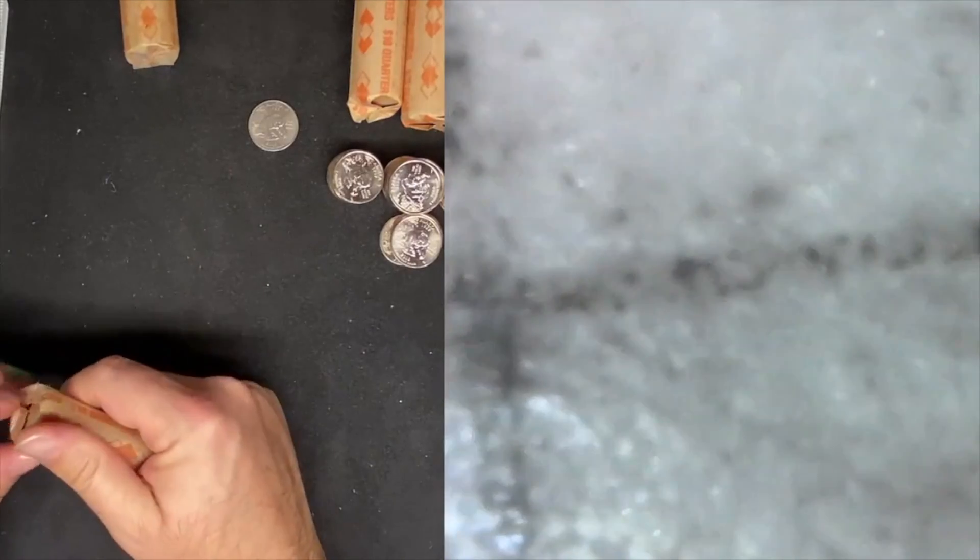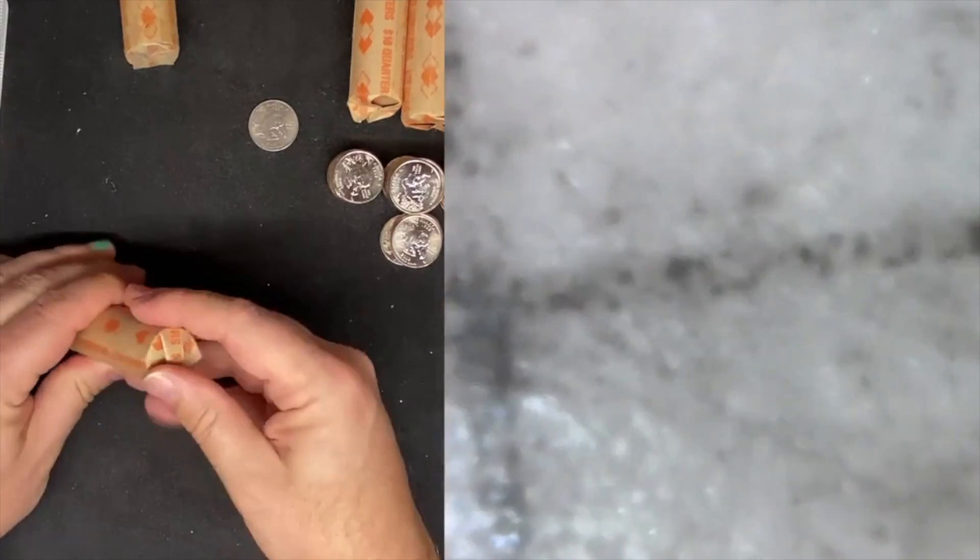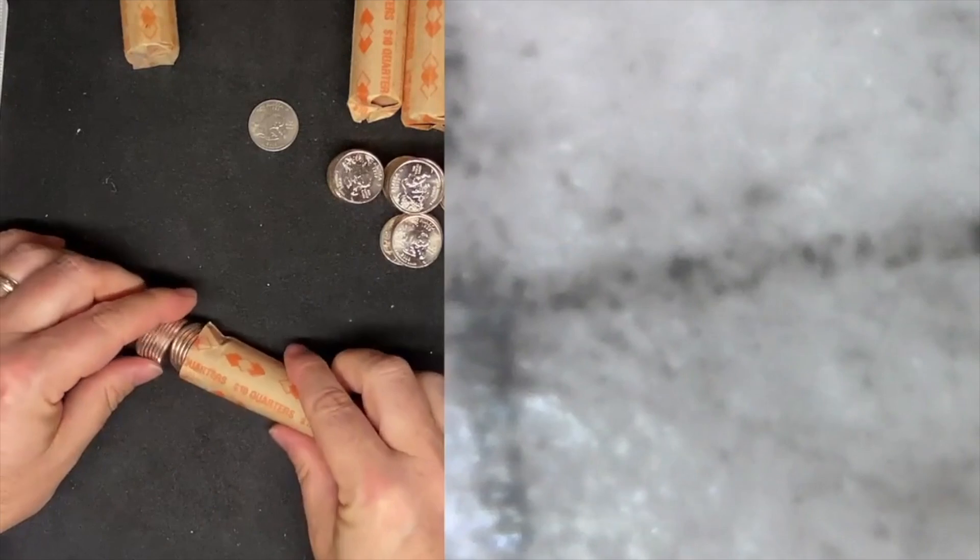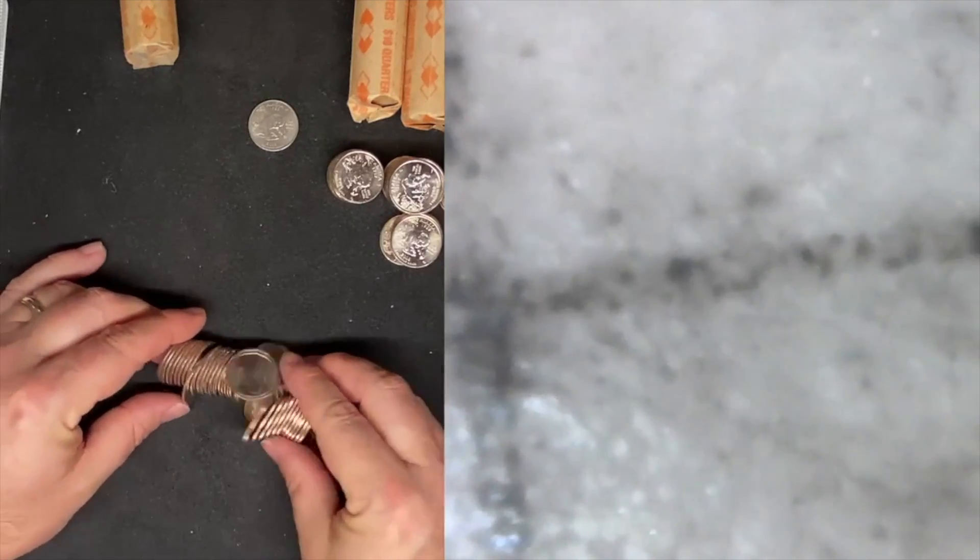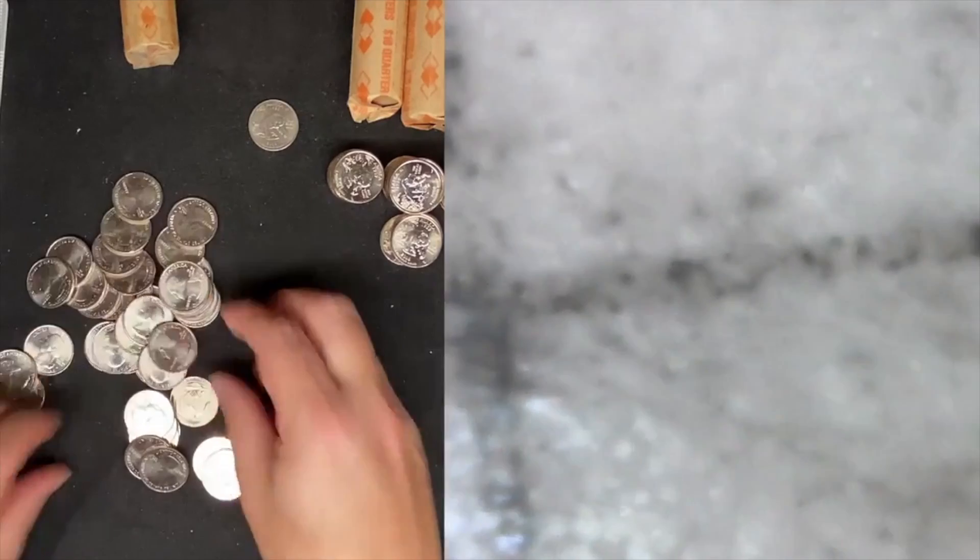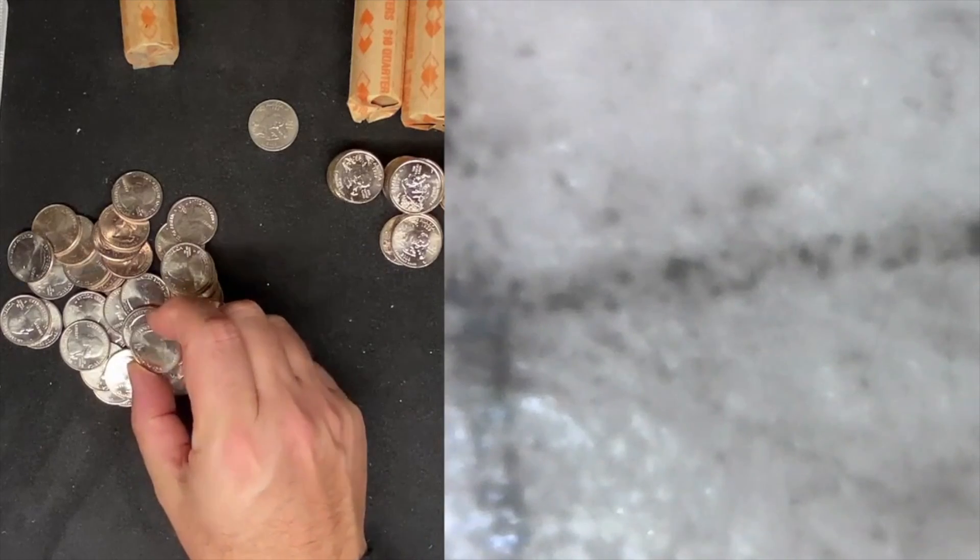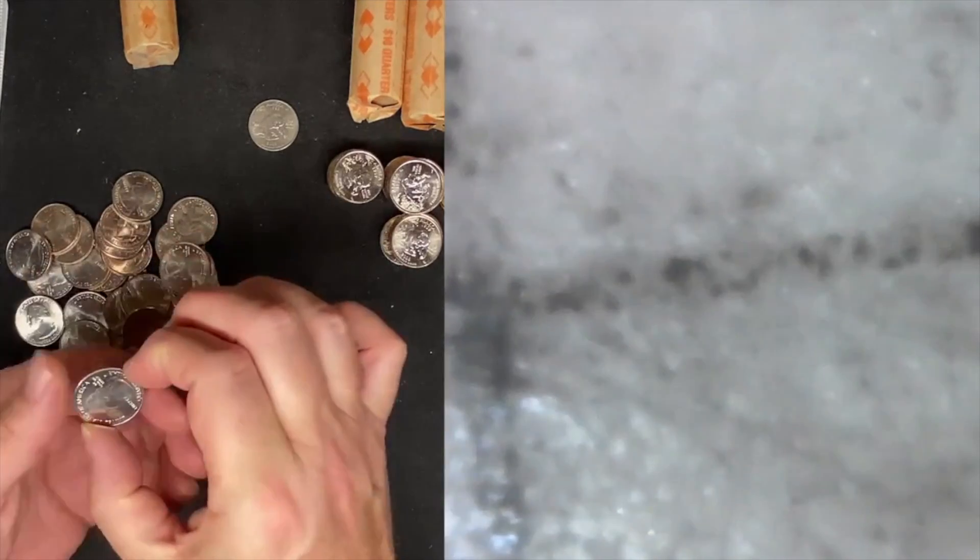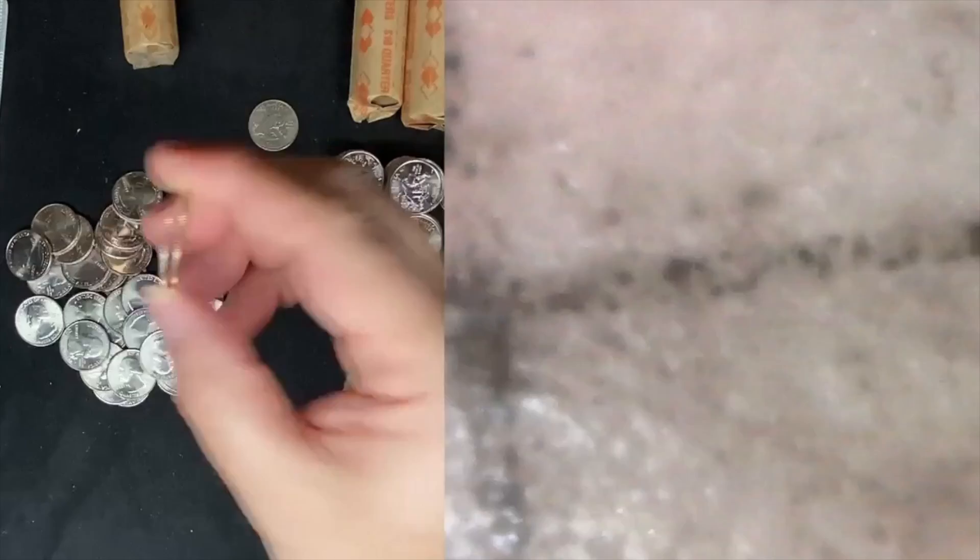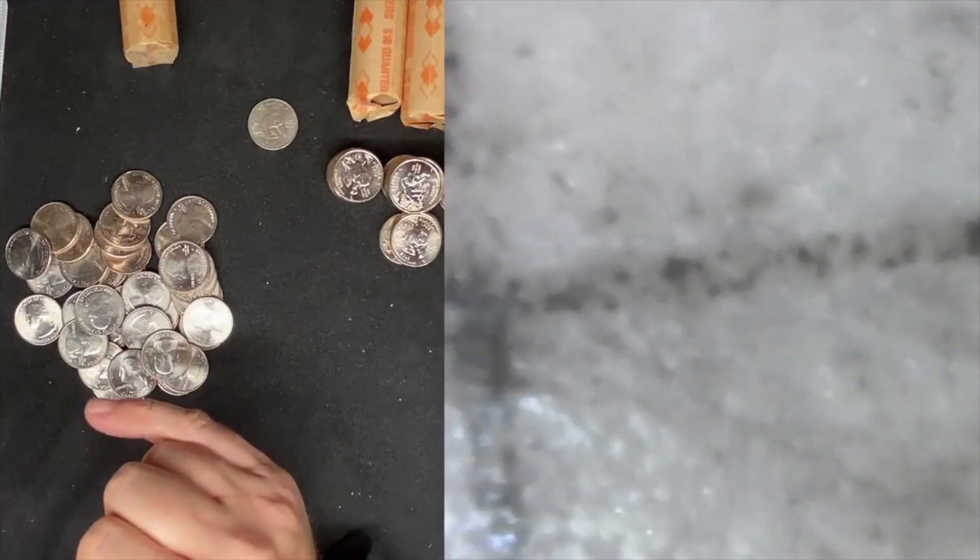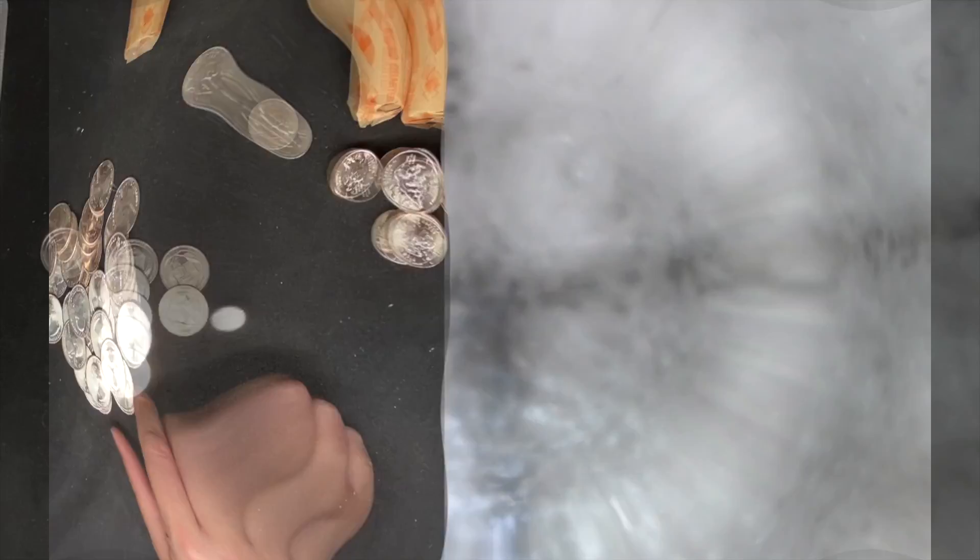All right. So next, we're actually going to do these homesteads. Let's get these open. Now, if you've watched my channel, we found a lot of circulated homesteads, and this is a repacked roll by a customer. They look fairly uncirculated. But they could have been hunted. We're going to go through these. They look pretty good. They are circulated. They don't have quite the luster on them that the other quarters do, but they don't look bad.